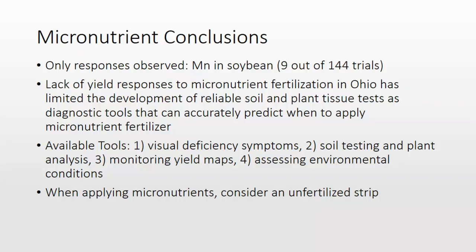So in the absence of great diagnostics, what can we do? We can do all the things we always do — look at plants and see where things are chlorotic or looking weird. We can certainly soil test and use plant analysis, plant analysis being probably the best indicator. We can look at yield maps and assess environmental conditions to think about when we might see deficiency symptoms. And if you are making the decision to apply micronutrients, I'm always going to encourage folks to leave a test strip — leave a strip where you're not applying and see if you can find anything in a yield monitor.